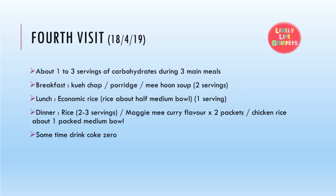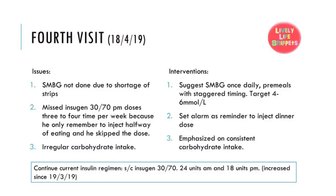About three months later, the patient came for the fourth follow-up. Mr. Ull took about one to three servings of carbohydrates during three main meals. One of the three issues was that the patient did not perform SMBG because test strips ran out. We suggested performing SMBG once daily pre-meals with staggered timing, with a target level of 4–6 mmol per litre. The second issue was compliance — he missed Insigen 30/70 PM doses 3 to 4 times per week because he only remembered to inject halfway through eating and skipped the dose. We suggested setting an alarm as a reminder to inject the dinner dose. The last issue was irregular carbohydrate intake. We advised continuing current insulin regimen S.C. Insigen 30/70 at 24 units pre-breakfast and 18 units before dinner, which had been increased since 19 March 2019.